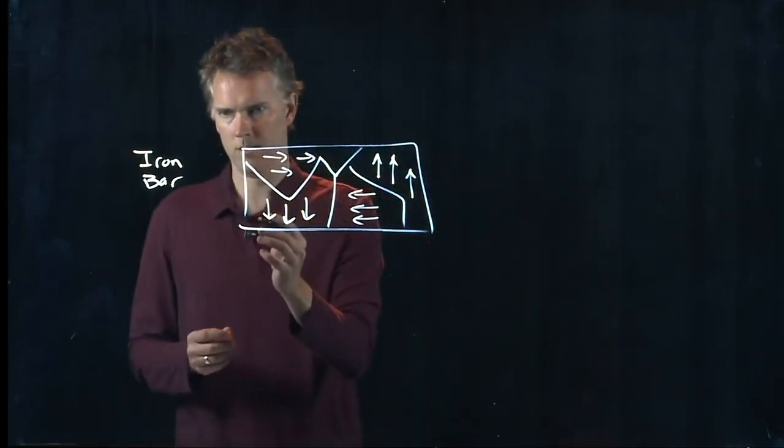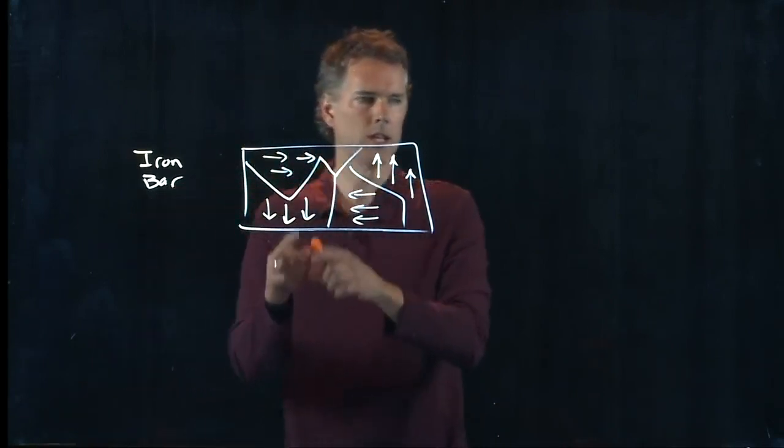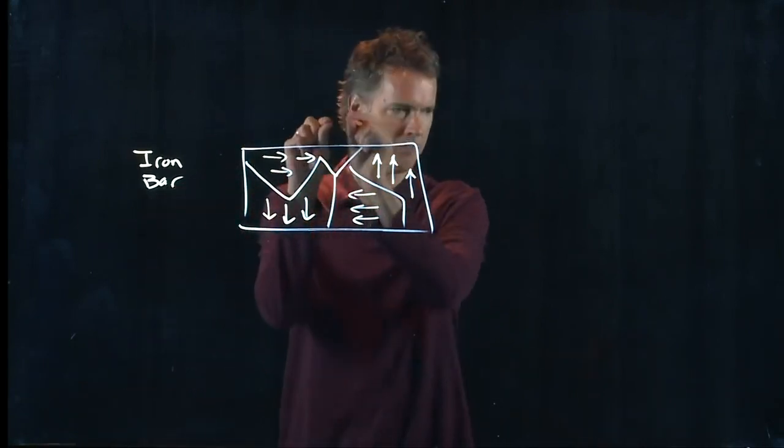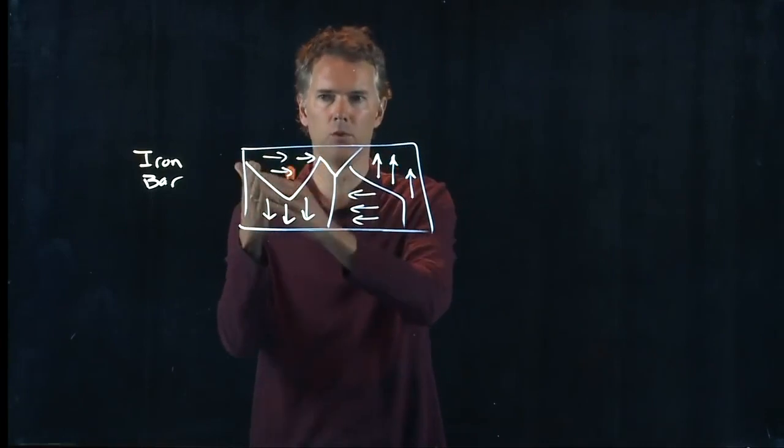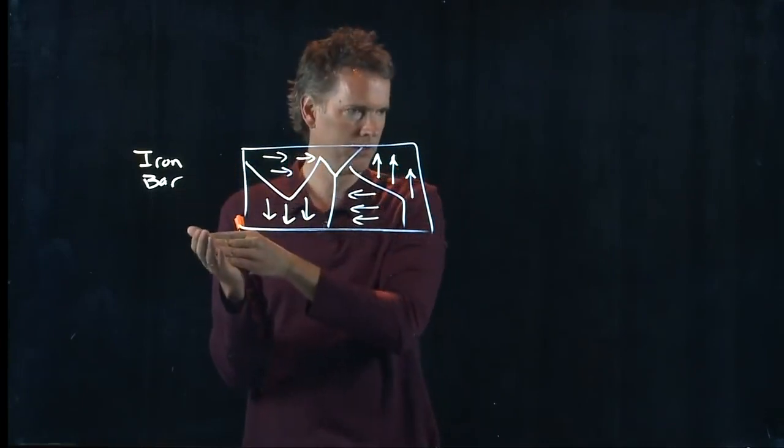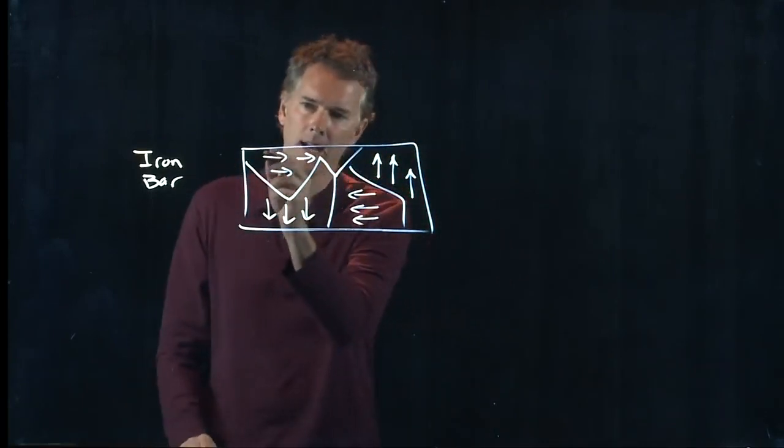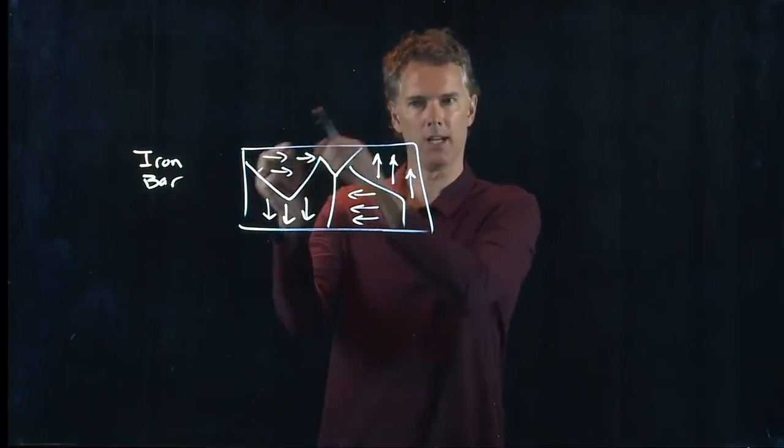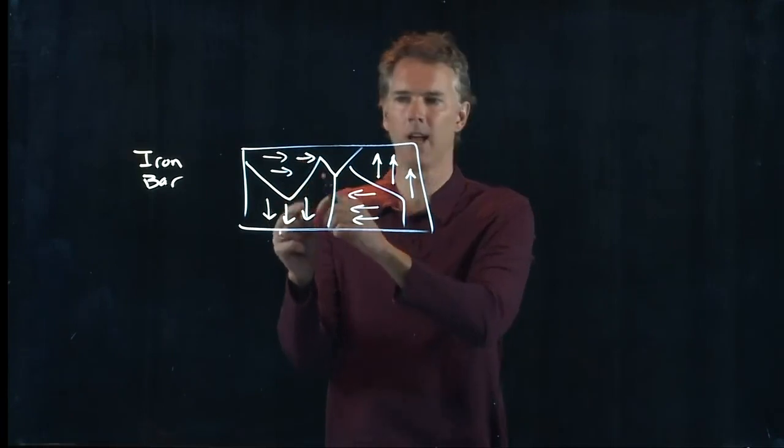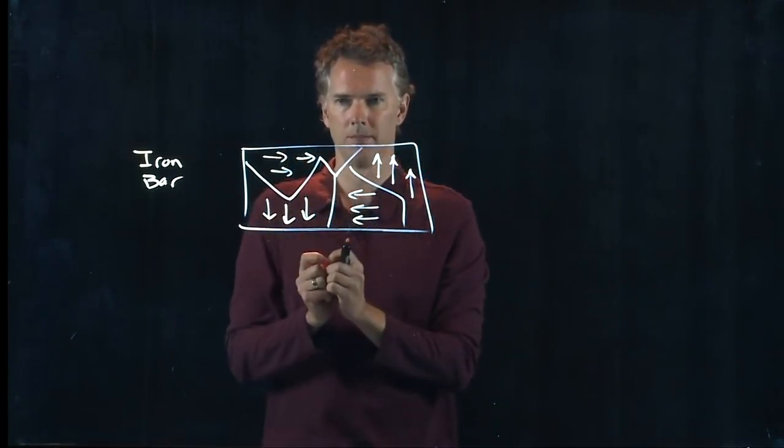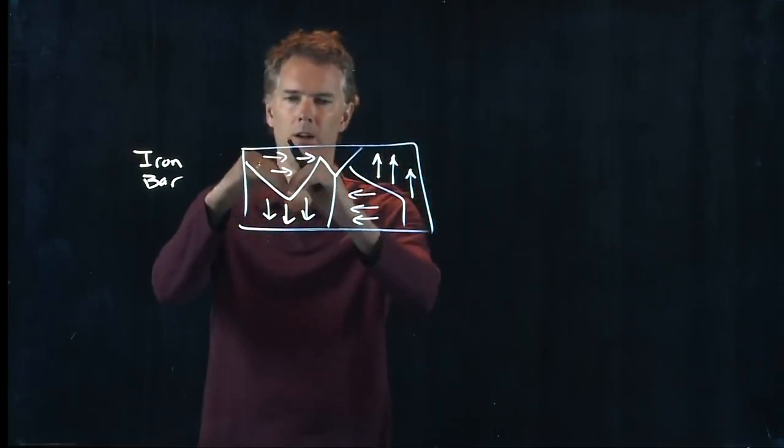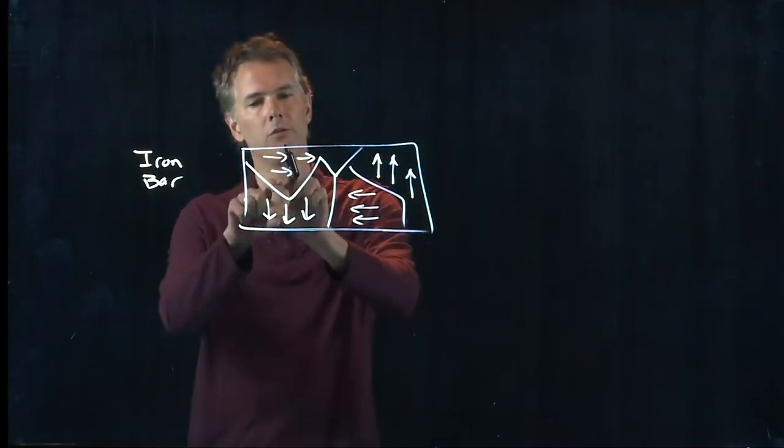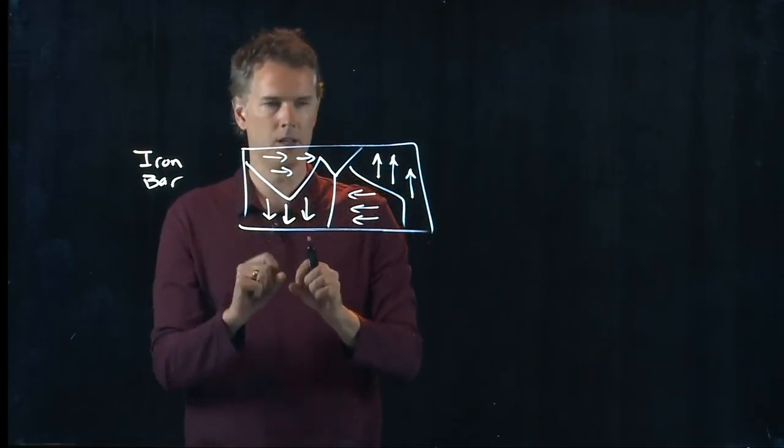In iron it turns out the electrons have a spin which talks to the neighboring electrons. So in this domain, that is a region where all those electrons are talking to their neighboring electrons and saying let's line up in this direction. And that works for a while until you get to the edge of the domain, and then there's another group down here that does the same thing.